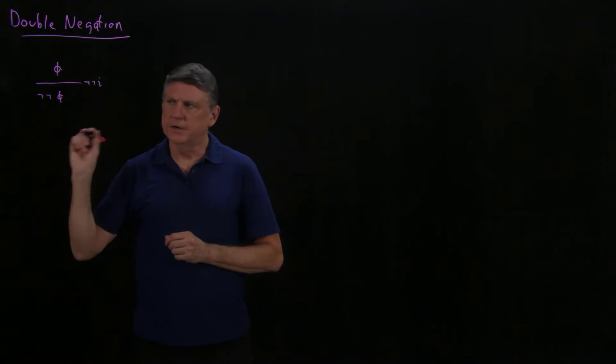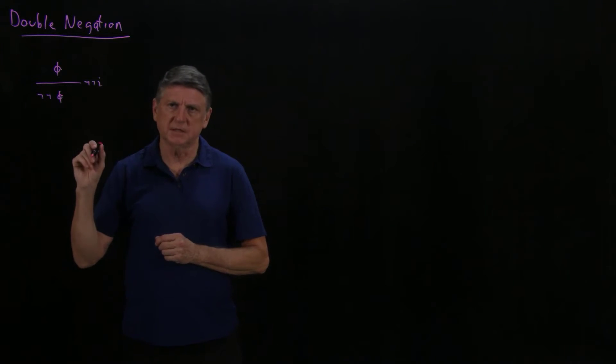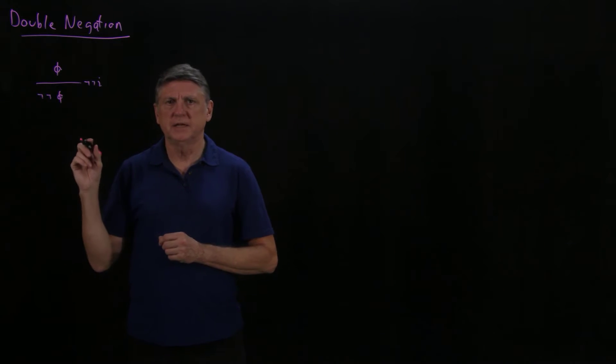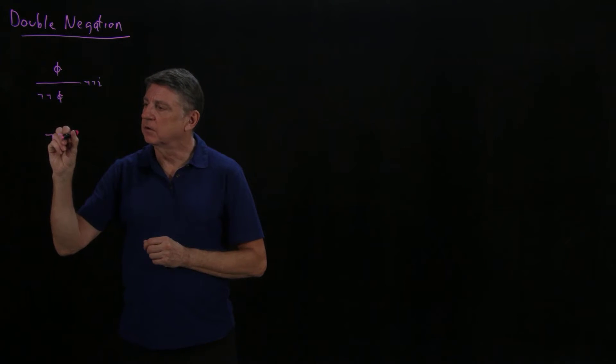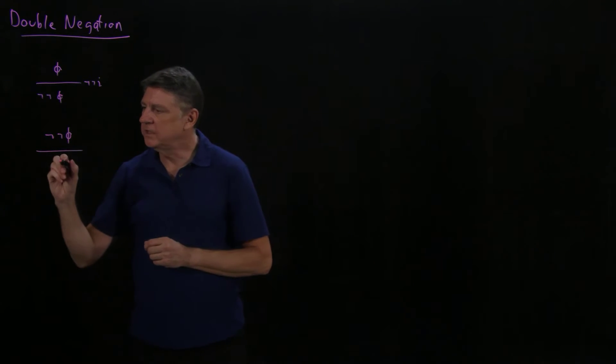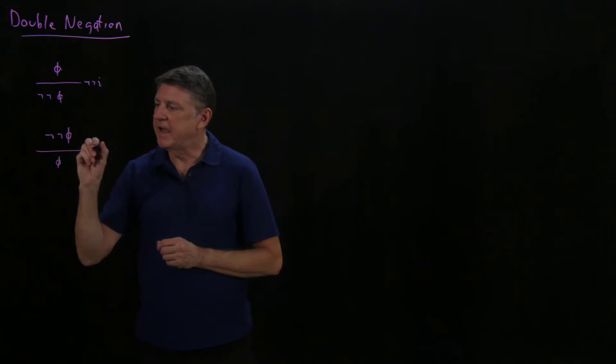There's another part, another rule, that sometimes is and sometimes isn't used. It will not be used in an intuitionistic or constructivist logic. We will, however, employ it, and this says that if we see a double negation on a line, we can conclude that the formula should be on its own line, and this is double negation elimination.